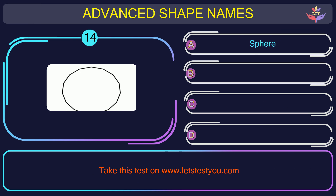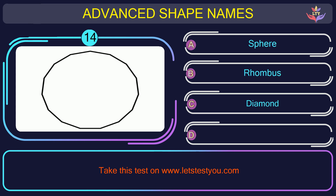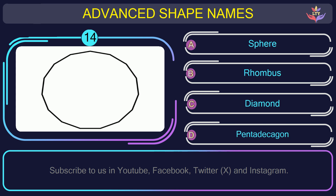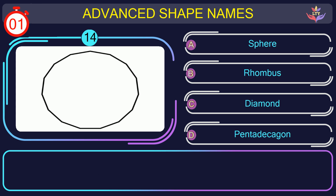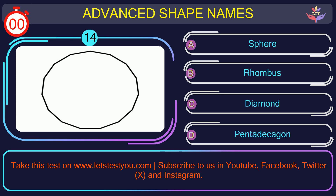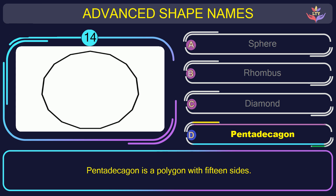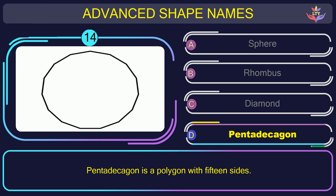Question number fourteen. Guess the name of the shape in this picture. The correct answer is option C. Hendecagon is a polygon with fifteen sides.